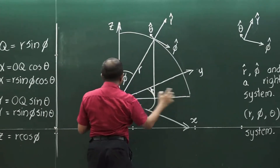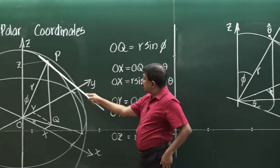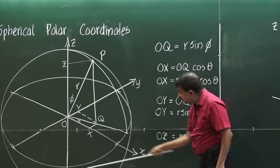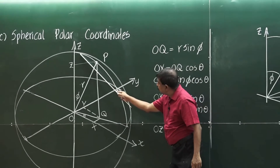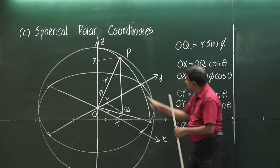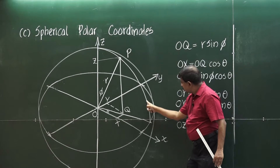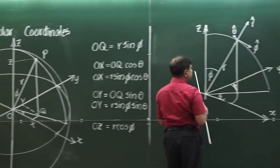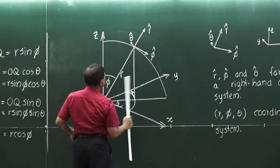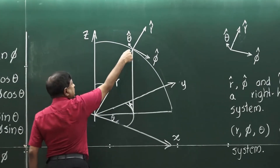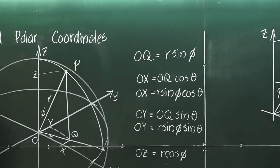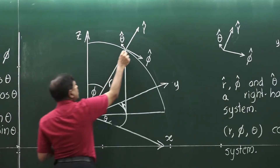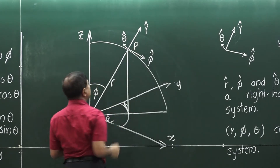In this case, if you take this as a globe, this curve is a longitude. Likewise, in this other case, this is also a longitude. Let this point be P — even though it is not necessary, let us take it as P.